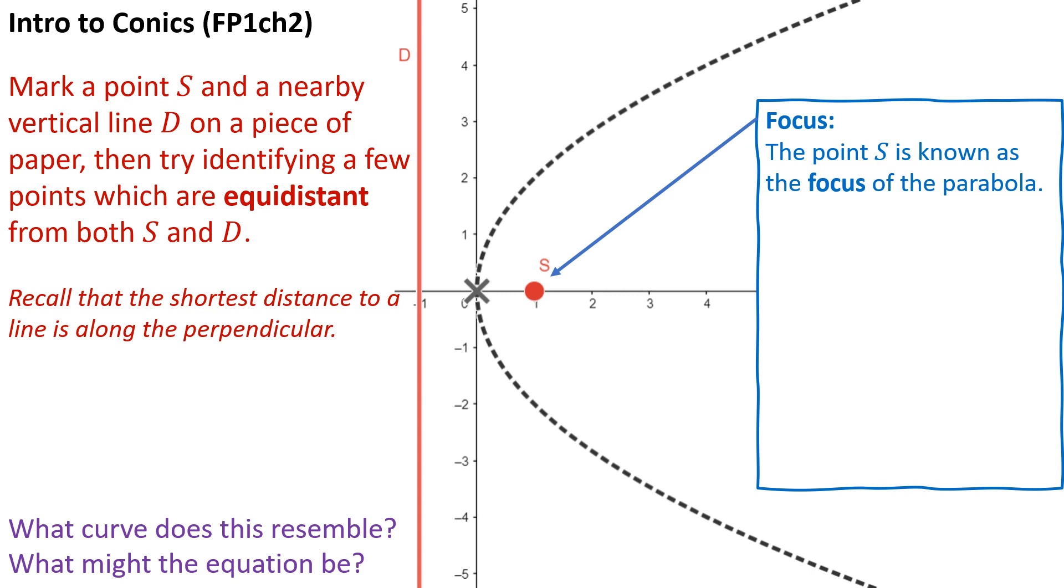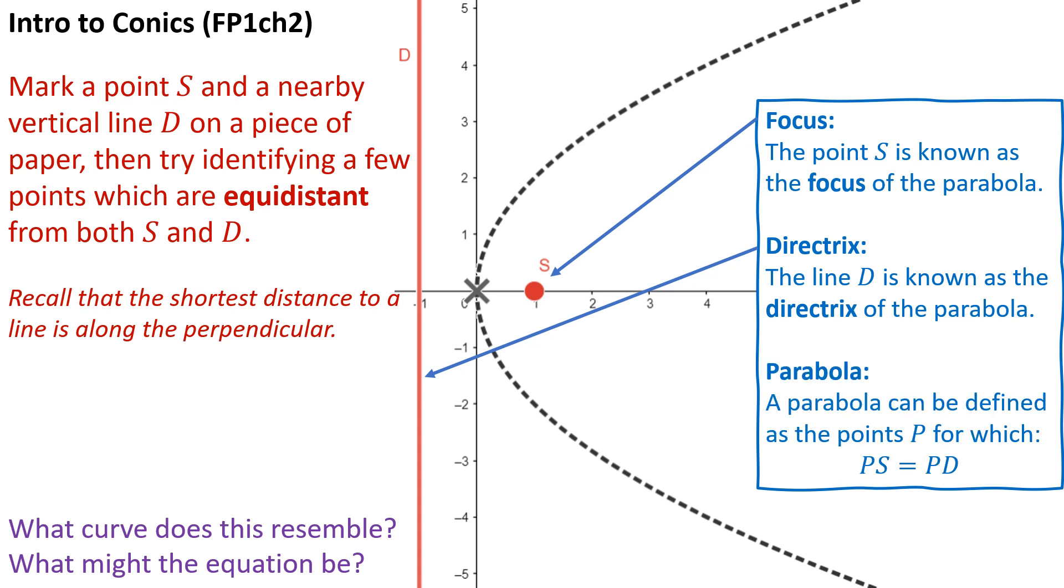This point is known as the focus. Because the shape we're looking at is in fact a parabola - it's not an ellipse, it's not a hyperbola, it is a single branch but it doesn't join up with itself. A parabola can be defined uniquely by giving the location of its focus, a focal point, and something called a directrix, which determines the direction of the parabola. So that line is known as the directrix of the parabola, the point is known as the focus, and a parabola can be defined as the set of all points P for which the distance from P to S is identical to the distance from P to D.